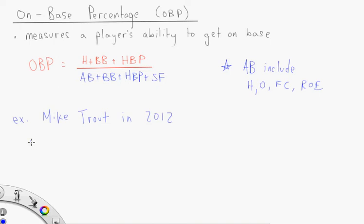So his number of hits to this point is 124. The number of walks is 37. The number of times he's been hit by a pitch is 5. The number of total at-bats is 358. The number of sacrifice flies is 6.